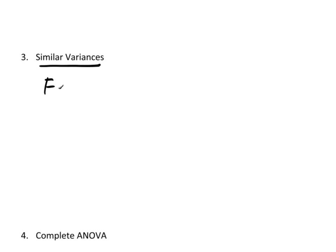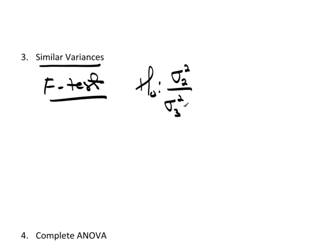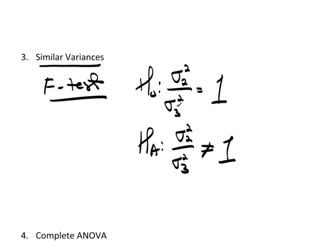For my F-test, note that the assumptions — independence and normality — have already been satisfied. If they weren't, I'd be doing a non-parametric technique instead. My null hypothesis is sigma-squared of group 2 divided by sigma-squared of group 3 equals 1 — meaning they're similar. The alternative is that ratio is not equal to 1. Since we have an inequality, it's a two-tailed test, and it doesn't matter if I set it up as 2 over 3 or 3 over 2, as long as the null and alternative use the same pattern.